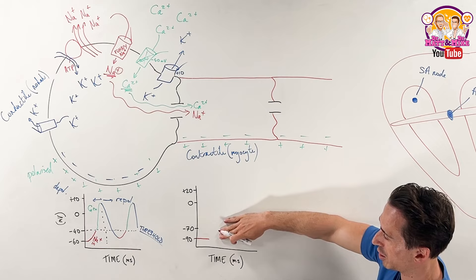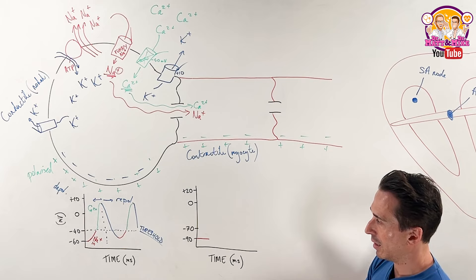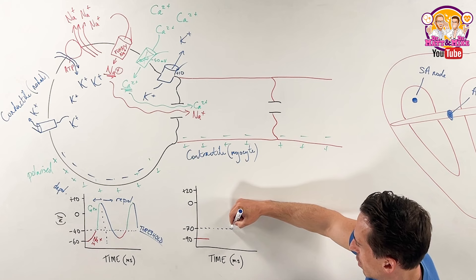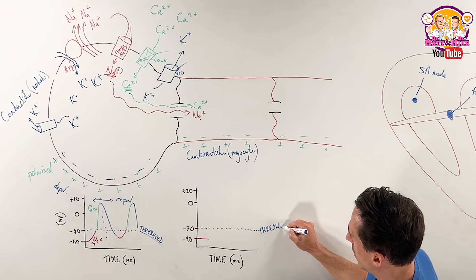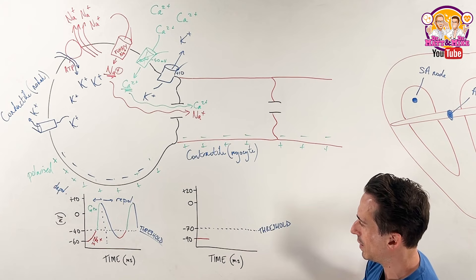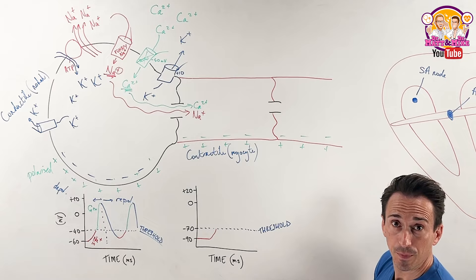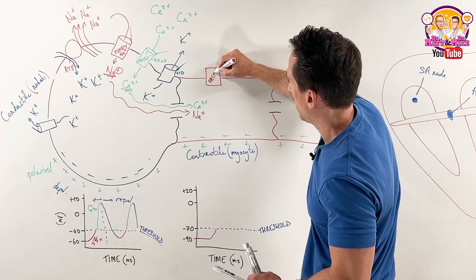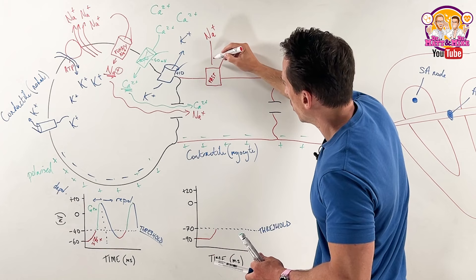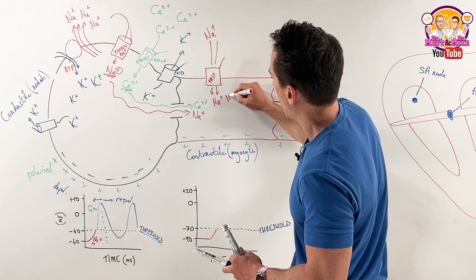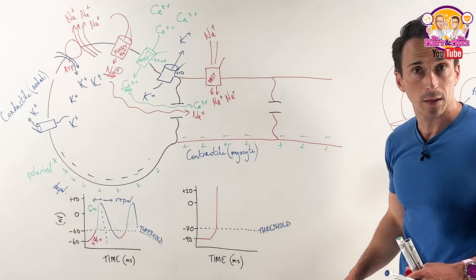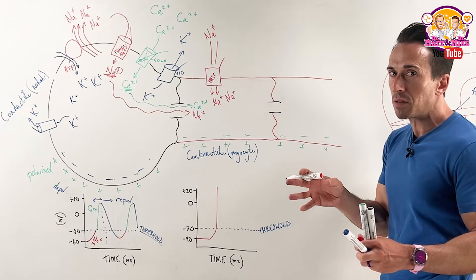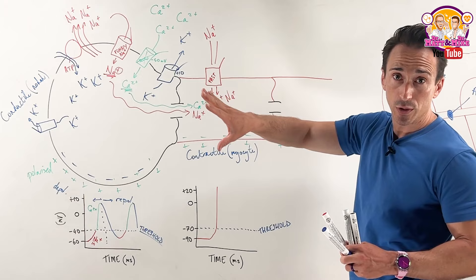Once the calcium and sodium from the conductile cell start moving in, it's going to make that part of the contractile cell membrane slightly positive. The threshold for the contractile cell is different - it's around about negative 70. Once enough sodium and calcium have moved in to hit that threshold, negative 70 is the key to open a new channel. This channel is a fast sodium channel. The sodium is outside, so it rushes inside really quickly, carrying that charge with it, which means it spikes right up super quick to around about positive 20 millivolts.